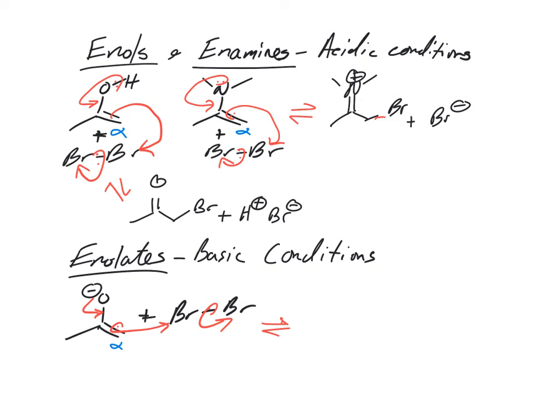Back to the basic enolates, negative charge of the electron density of the alpha carbon. Does this, essentially, this is a substitution reaction, right? In both these cases, these are just like SN2 reactions. And you get to the same products. But obviously different charges and different conditions.